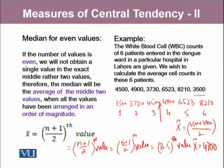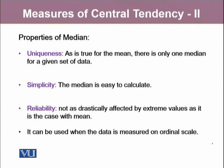There are other different formulas which are used to calculate median, but we want to be very simplistic here. There are a few properties of median. Like arithmetic mean, median is a unique value. It is simplistic because it's easy to calculate. It's also reliable, much more reliable than mean in instances, because it's not drastically affected by extreme values. And it can be used when the data is measured on ordinal scale as well.